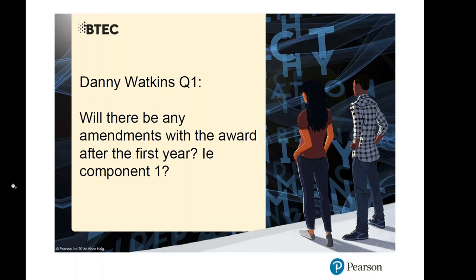Any changes to Component 1 would be to clarify areas of coverage stated in the content. There's been some confusion over the term 'practitioners' as used in Component 1. In Component 1, a practitioner refers to any creative theatre-maker or screen-maker involved in the works being studied — for example, a director, designer, performer, choreographer, musical director, or writer. There isn't necessarily a requirement to look at big-name practitioners with international reputations; you can, but it's not a requirement for Component 1.